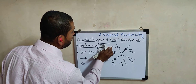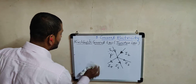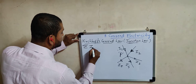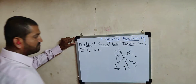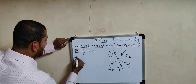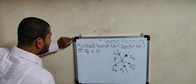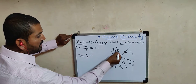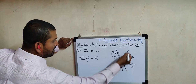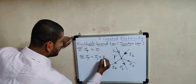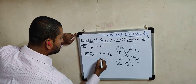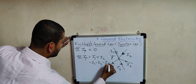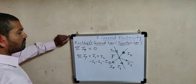Using this statement, we consider the explanation for this law. As per the statement, sigma I at the junction is always equal to zero. Applying the sign convention: I1 is coming towards the junction, so it is positive; I2 is coming towards the junction, so it is also positive; I3 is going away from the junction, so it is minus I3; similarly, minus I4 and minus I5. This is the algebraic sum of all the currents.